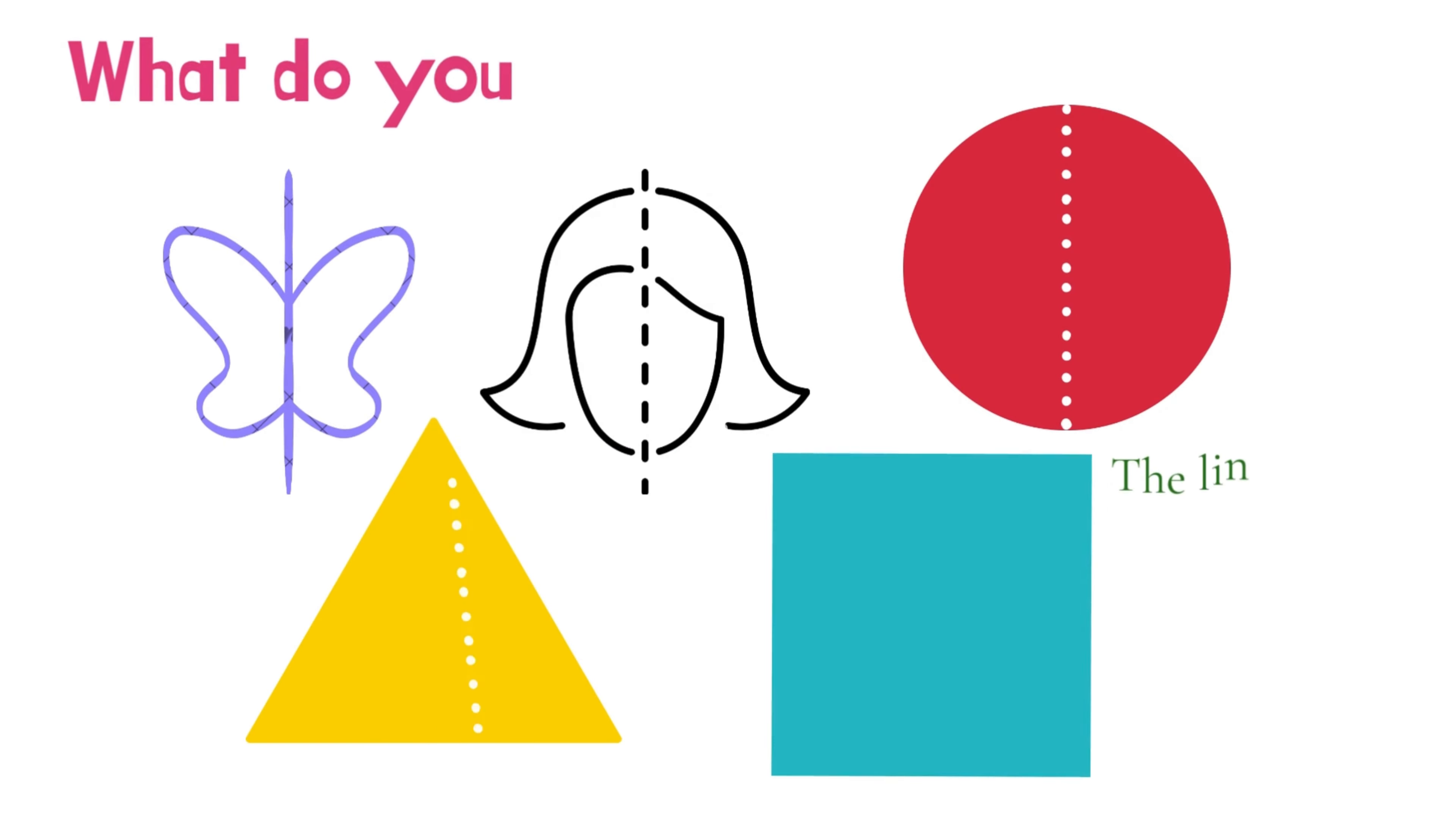What do you see? The line divides the shape into two shapes which look exactly the same.